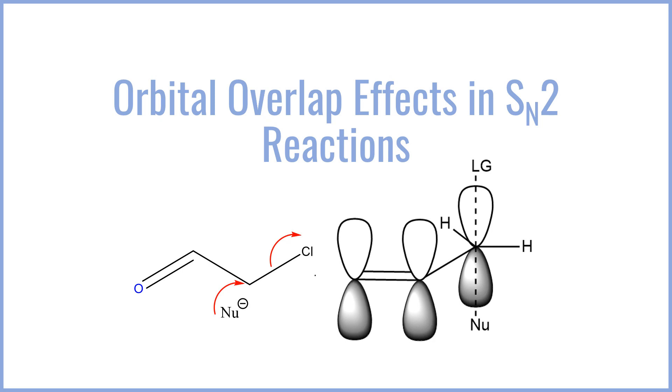We're going to be looking at how allylic substrates, and even those next to carbonyls, receive a rate enhancement thanks to a secondary orbital overlap which impacts the reaction kinetics. Let's go ahead and get started.